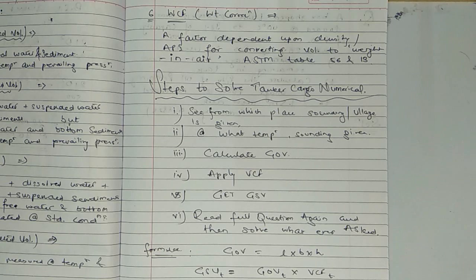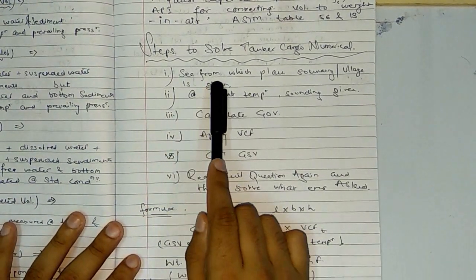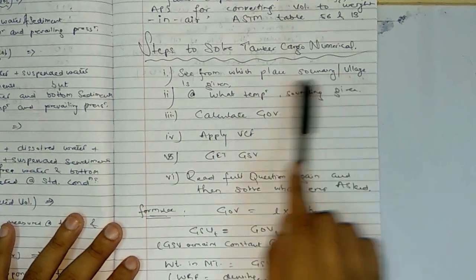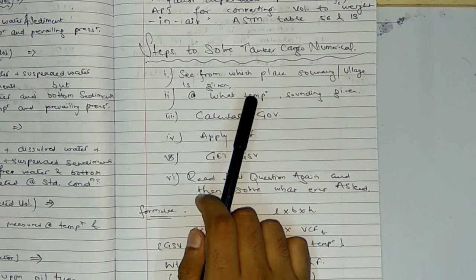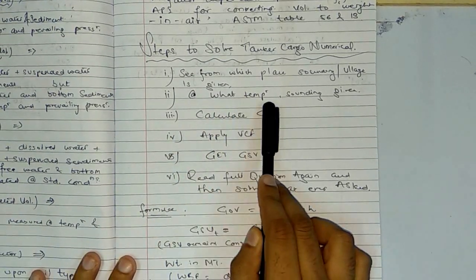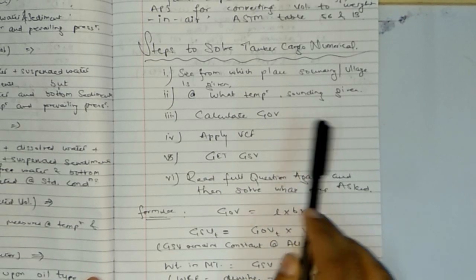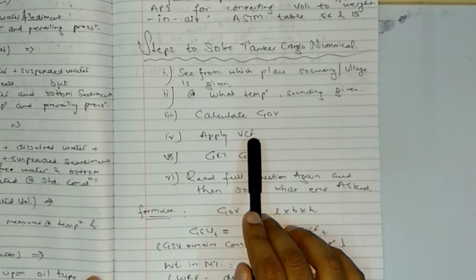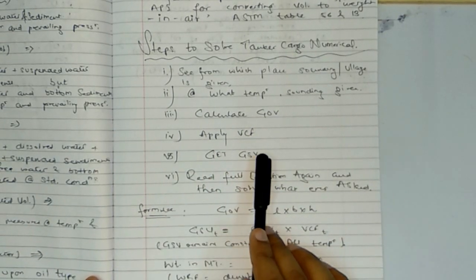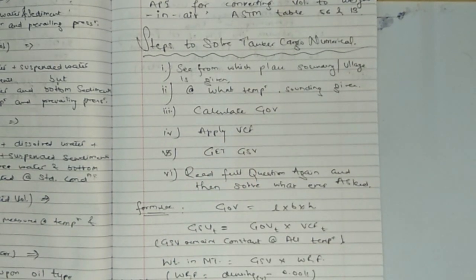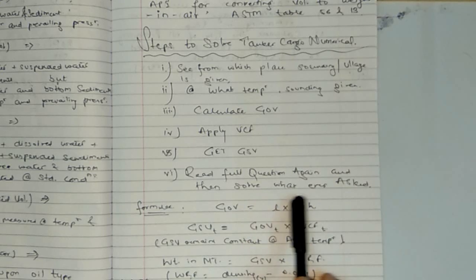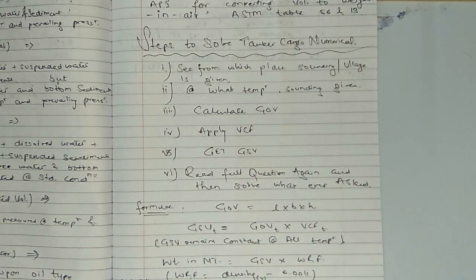Now let's go through the steps to solve tanker cargo numerical. First, see from the question where sounding and ullage is given, what temperature the sounding is given at, and what temperature we have to calculate at. Then calculate GOV at that particular temperature, apply VCF, and calculate GSV. Read the full question again and solve whatever is asked.